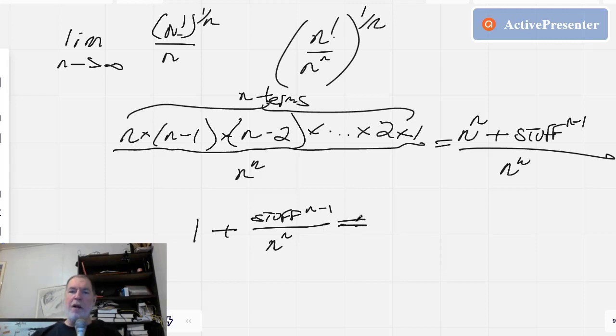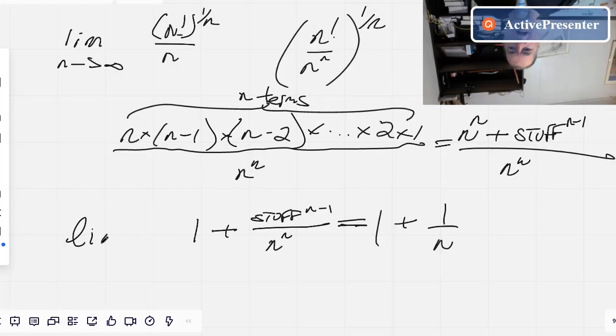bigger and bigger, will equal 1 plus 1 over n. Alright, but remember we're putting all of this where we want the limit as n goes to infinity of all of that to the 1 over n, which equals